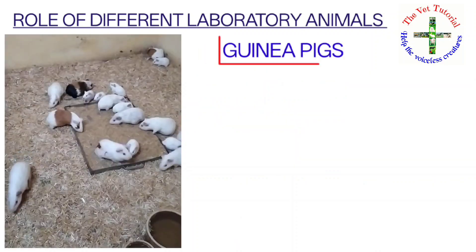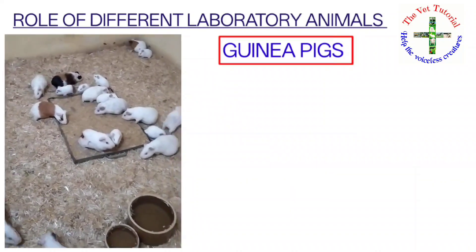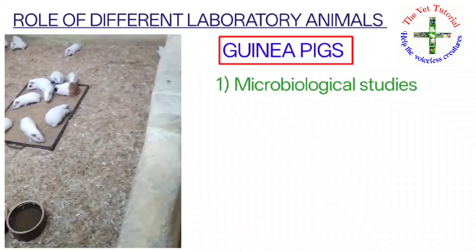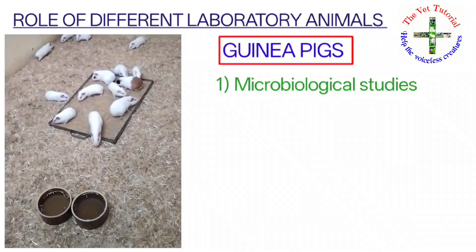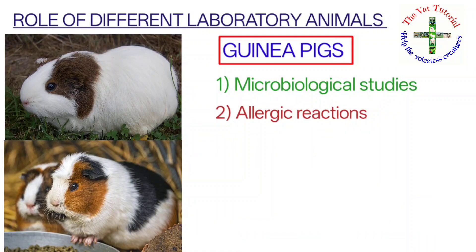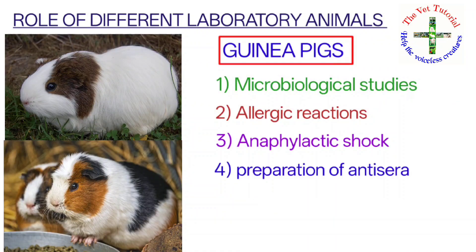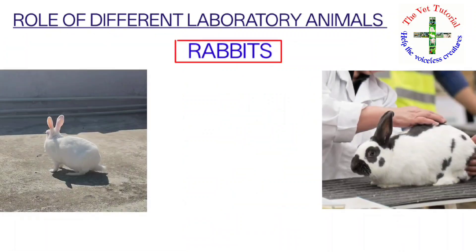Guinea pigs are used for microbiological studies, allergic reactions, anaphylactic shocks, preparation of anti-sera, and lastly used in lab diagnostics of tuberculosis, because lesions of tuberculosis are prominent in guinea pigs.